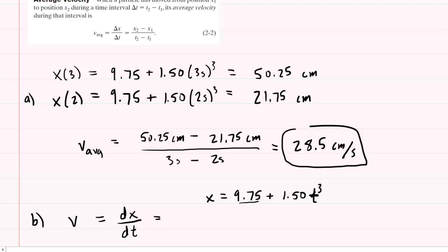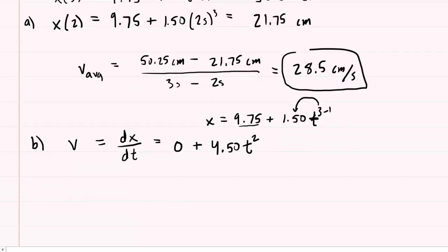The derivative of 9.75 is 0. So we would have 0 plus, and then the derivative here — you use your power rule. So you multiply the power by the coefficient, and you get 4.5. And then t is now raised to the power of 2, because you have to subtract 1 from the original exponent. So the instantaneous velocity is equal to 4.50 times time squared.